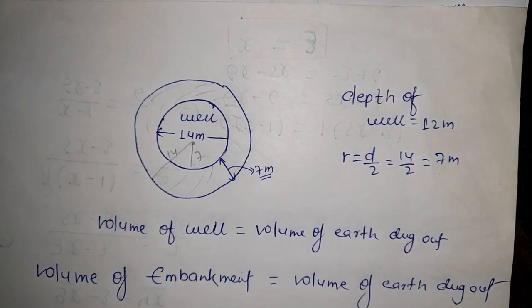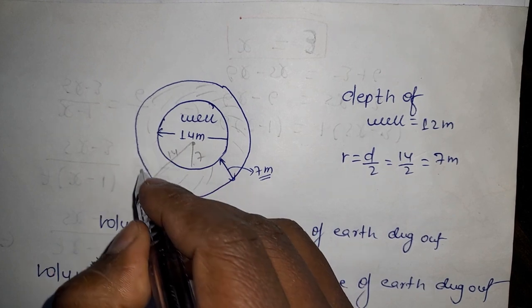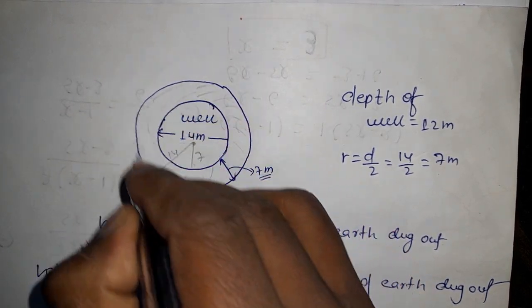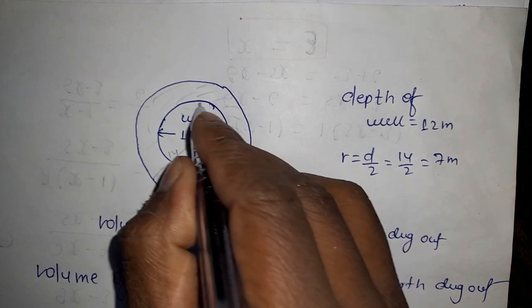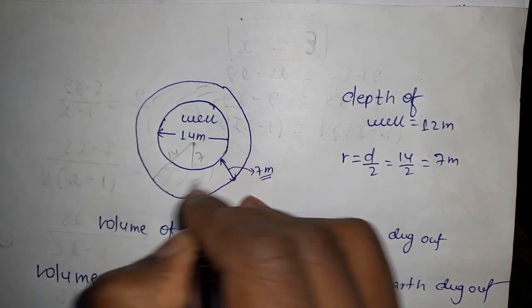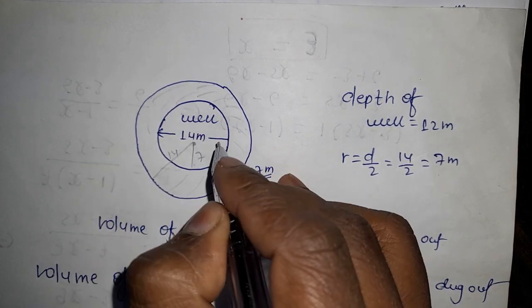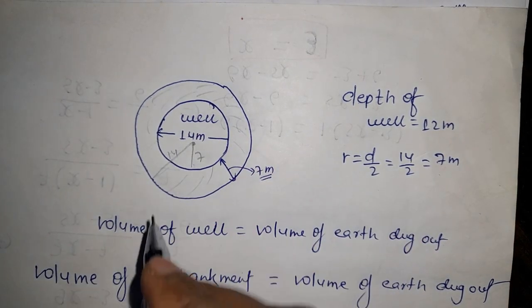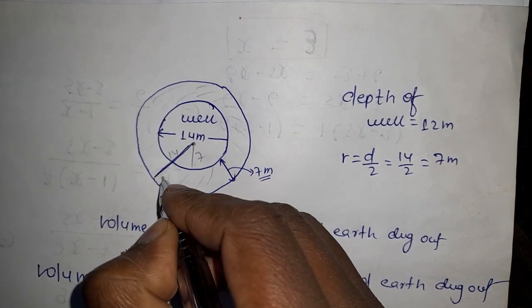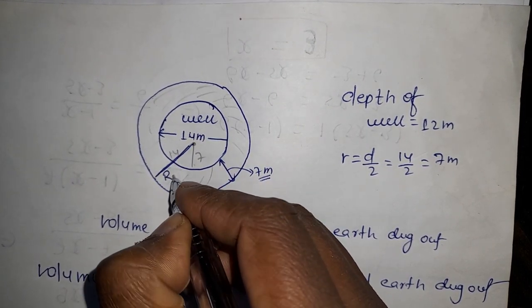Which is the platform? This is the platform. To find its volume, look - if you take the total volume of this circular region - this cylindrical region's volume - and subtract from it this cylindrical region's volume, then only this part will remain, giving you the embankment volume.